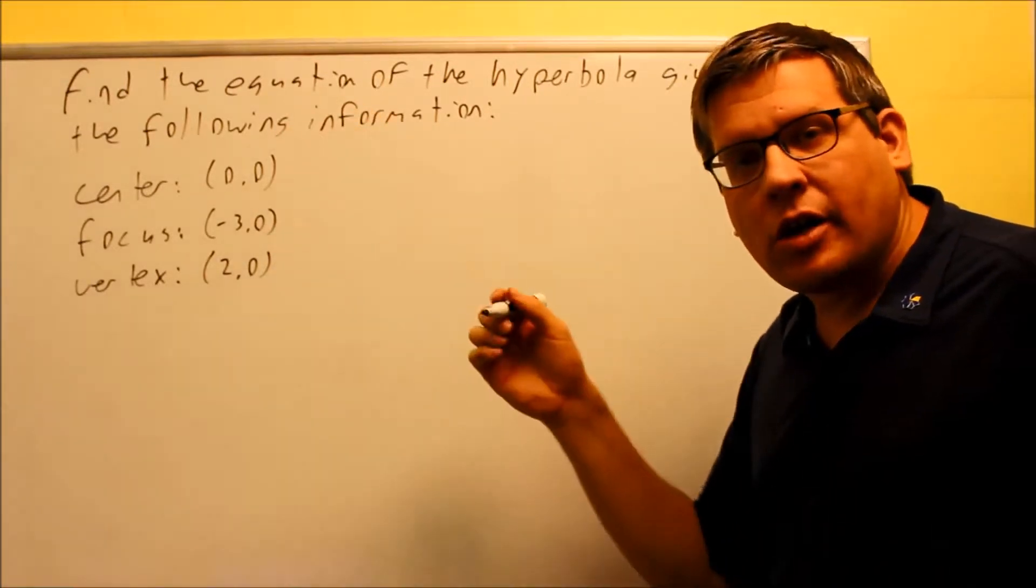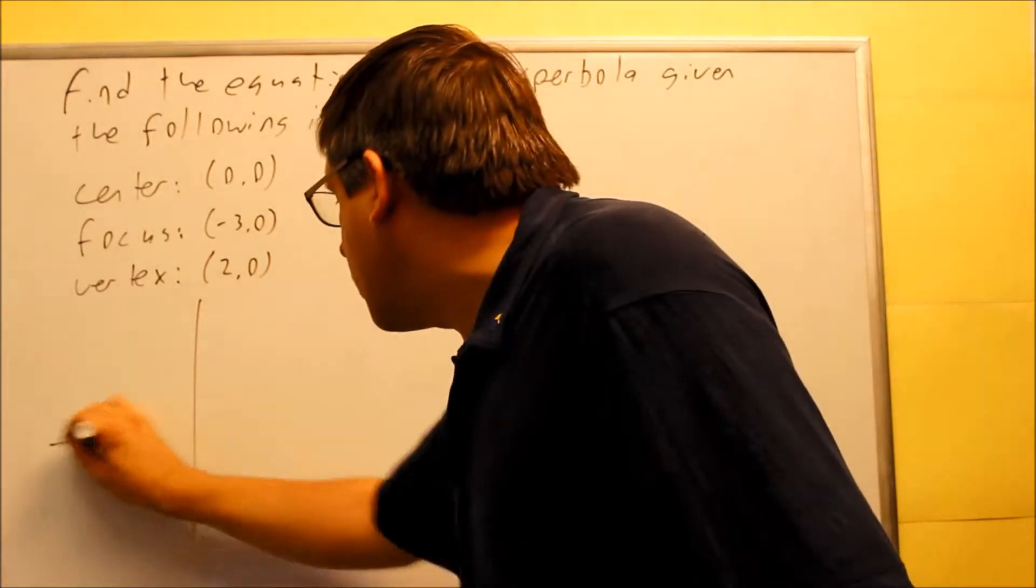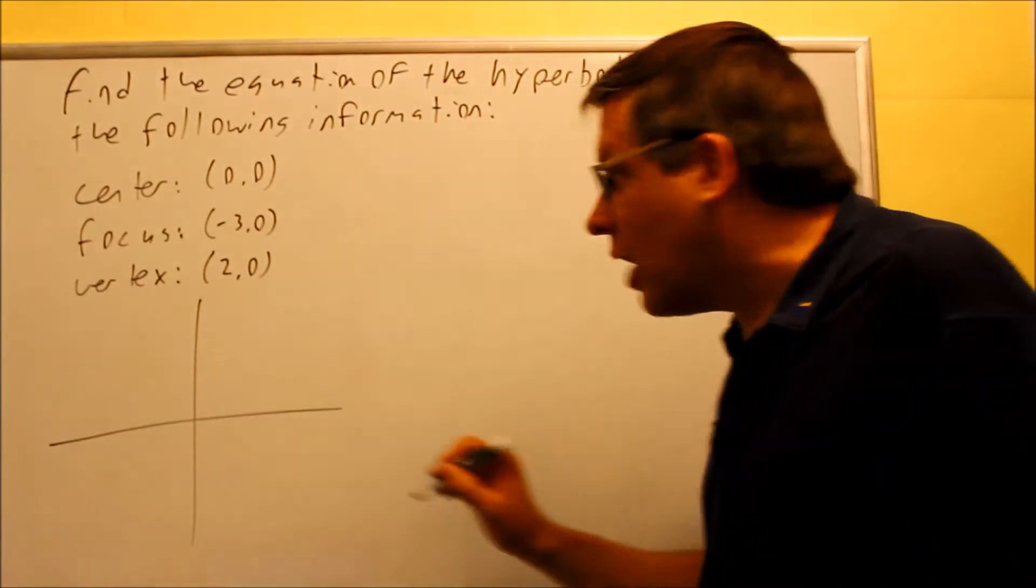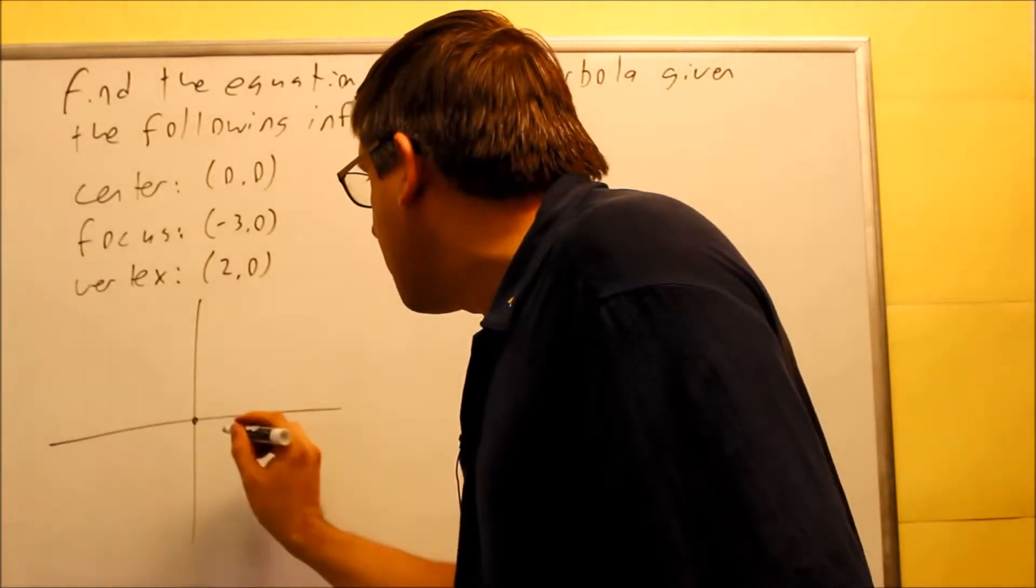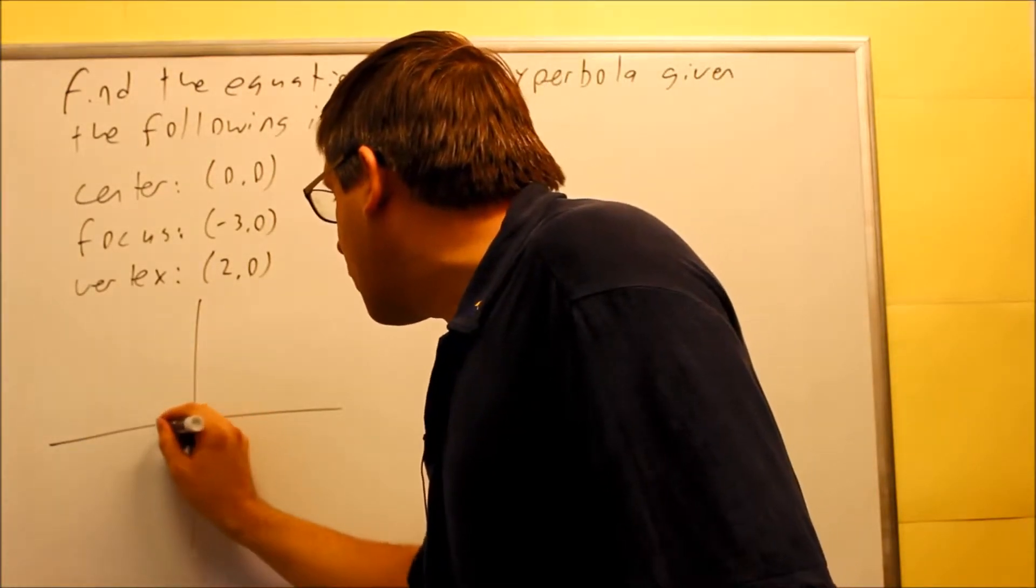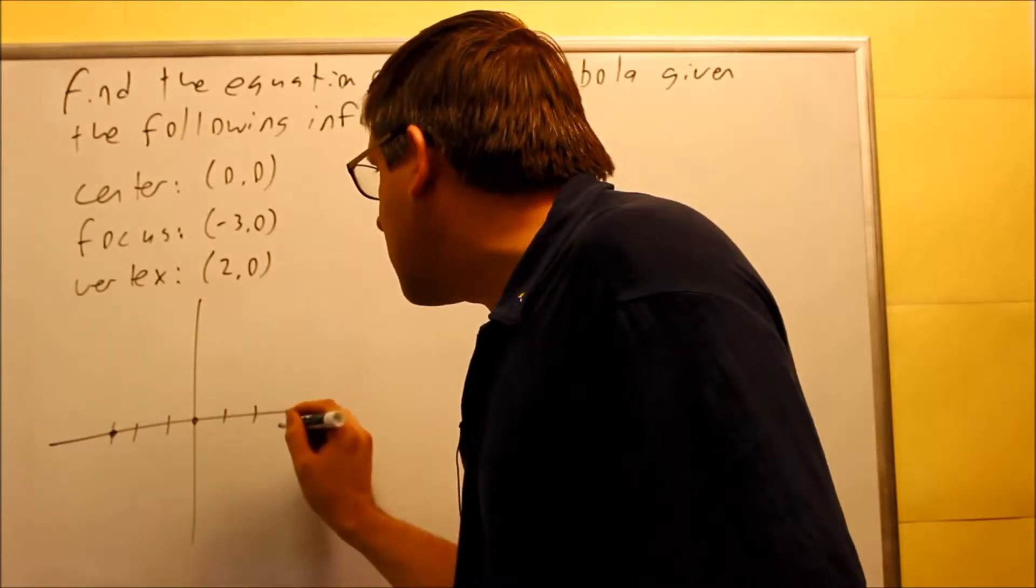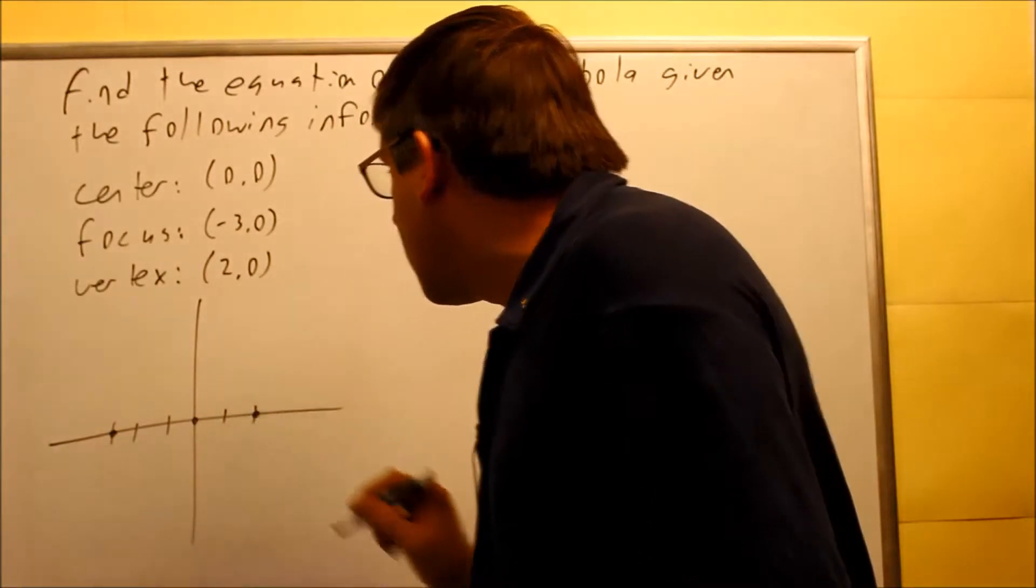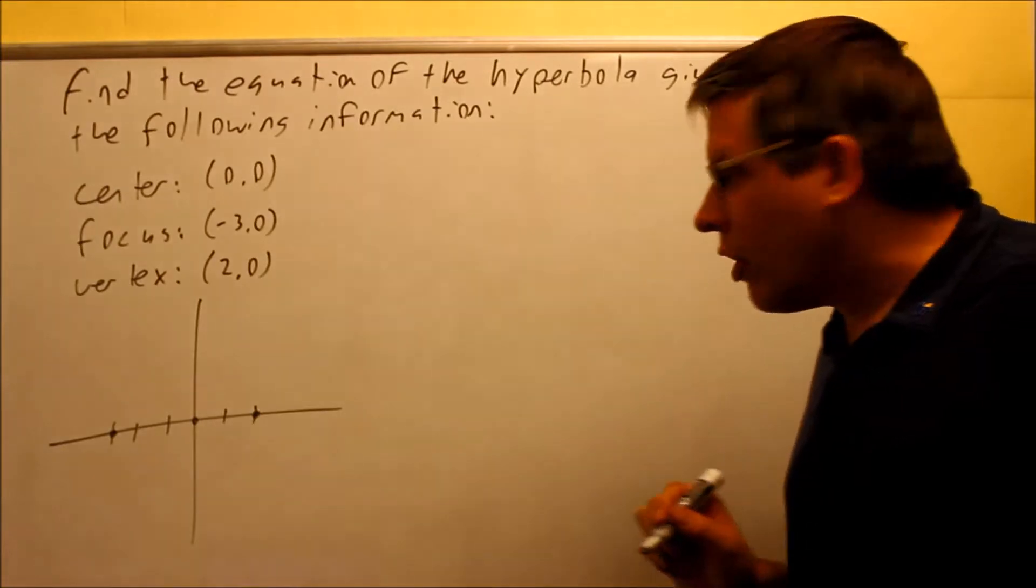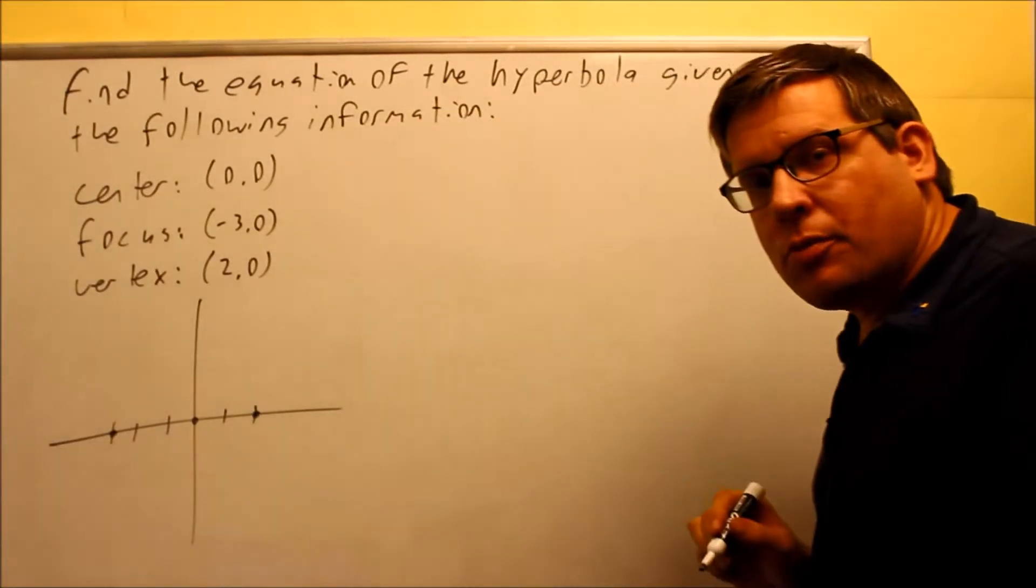So let's go ahead and start by plotting these points. That's always the best strategy you want to do on these problems. We'll start with center at (0,0). The focus is going to be at (-3,0). We go negative 3 and make a dot there. Your vertex is going to be right here at (2,0). Those are your three points that were given from the preliminary information.